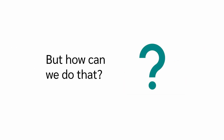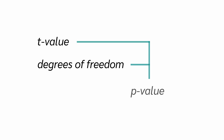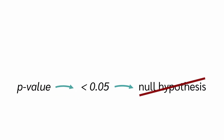Now we want to use the t-test to see if we can reject the null hypothesis. We already know how to calculate the t-value. With the help of the t-value and the degrees of freedom, we can calculate the p-value. We have separate videos on degrees of freedom and the p-value if you'd like to learn more. But to keep it short: if the p-value is smaller than 0.05, we usually reject the null hypothesis.